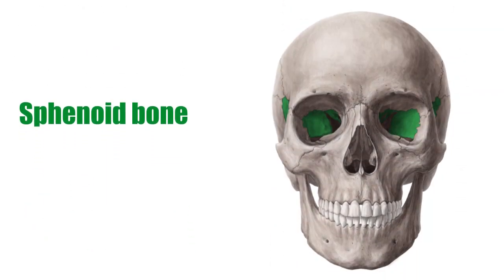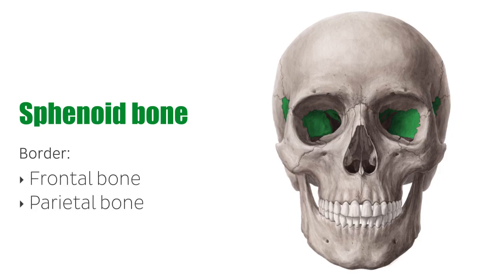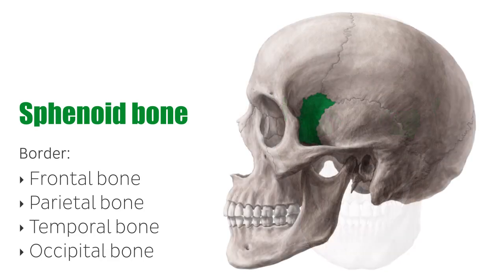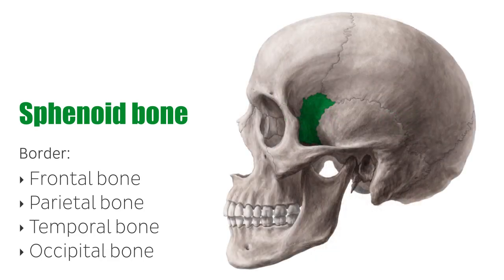The sphenoid bone has a common border with the frontal bone via the sphenofrontal suture, the parietal bone via the sphenoparietal suture, the squamous part of the temporal bone via the sphenosquamosal suture, and the occipital bone via the sphenooccipital suture. As the sphenoid and occipital bone fuse during puberty, the sphenooccipital suture disappears by the age of 25.